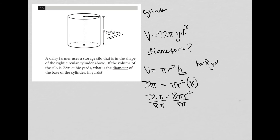72π divided by 8π gives me nine, because the π's cancel and 72 divided by 8 is nine. So 9 = r², and taking the square root of both sides gives r = 3.